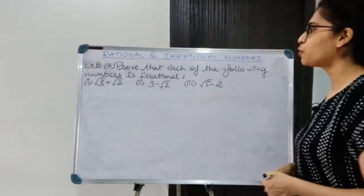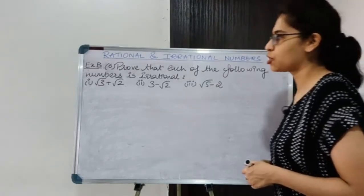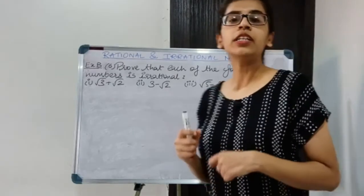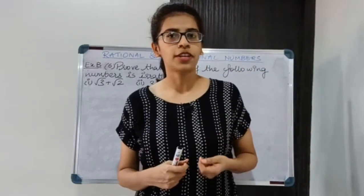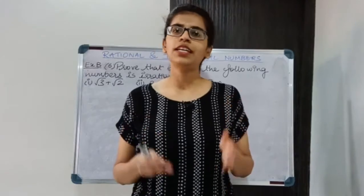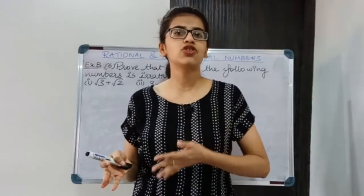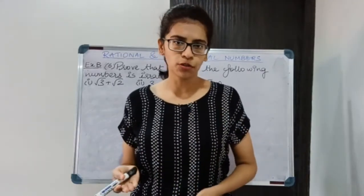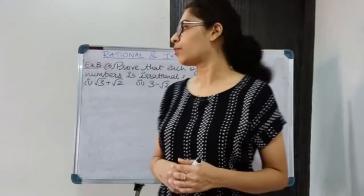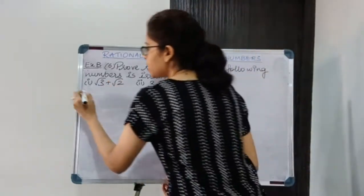Prove that each of the following numbers is irrational. We will use the method of contradiction — that is, we assume that these numbers are rational and then we will prove it to be wrong. So let's start with the first number.